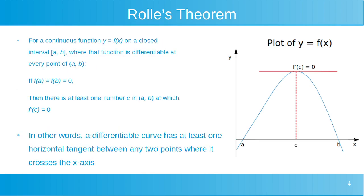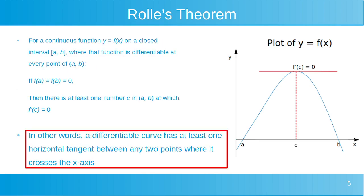In other words, a differentiable curve has at least one horizontal tangent between any two points where it crosses the x-axis.